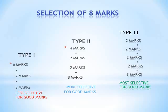Type 2 is 4 plus 2 plus 2, which is more selective for good marks. Type 3 is most preferable — that is 2 marks plus 2 marks plus 2 marks plus 2 marks — because the decrease of marks under each 2-mark section is very less.